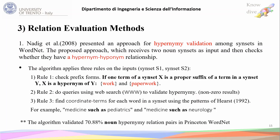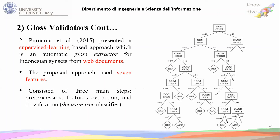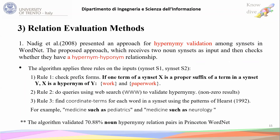The second paper on gloss validators, also from Indonesian WordNet, used seven features and a decision tree classifier to indicate whether the gloss extracted from web documents is accepted or not. This work was by Bornana in 2015.